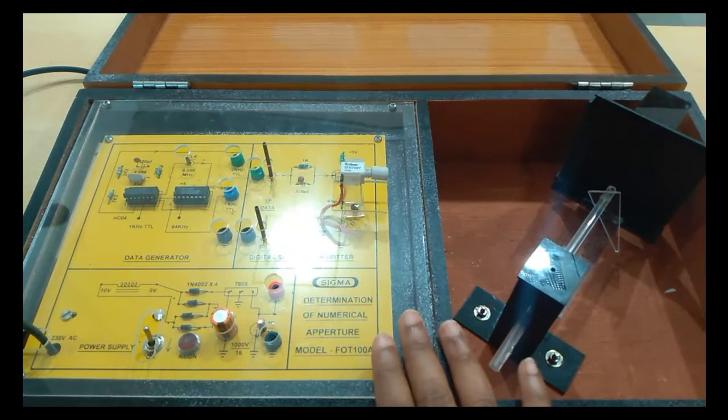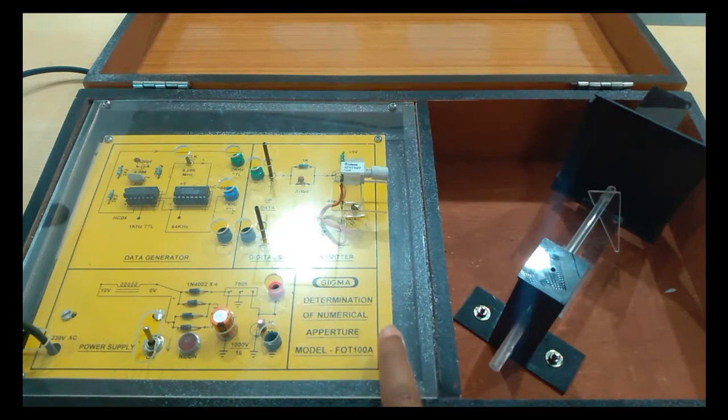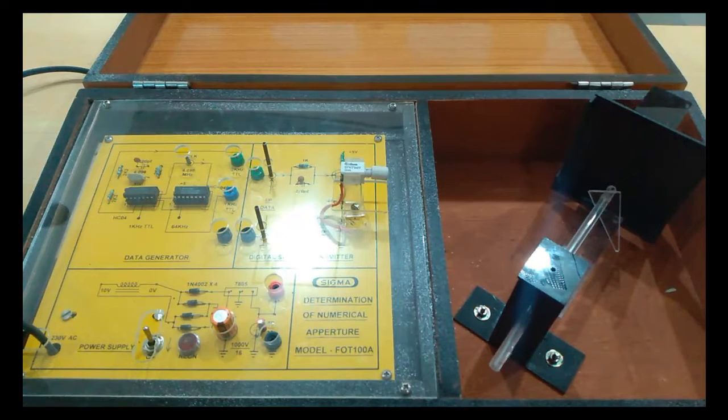This is a kit for Determination of Numerical Aperture model FOT100. We already discussed the circuit diagram and components available in a kit. So now I am going to perform the practical.